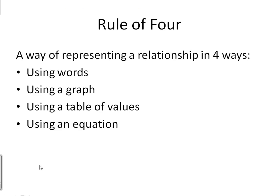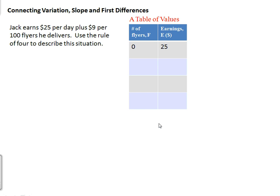Bringing all of these tools together, we're going to talk about the rule of four. The rule of four is a way of representing a relationship in four ways. We can talk about a linear relationship using words, a graph, a table of values, or an equation. Given any one of these representations, we should be able to switch back and forth to represent it the other three ways. Let's look at one example.